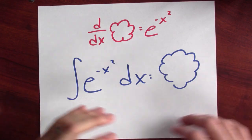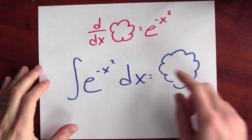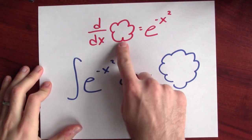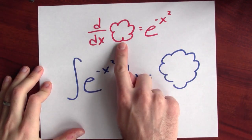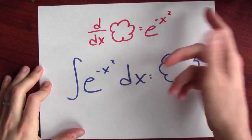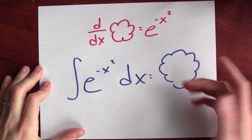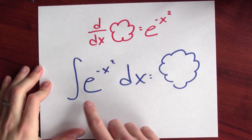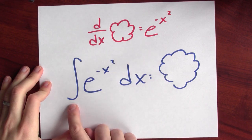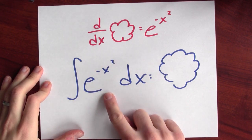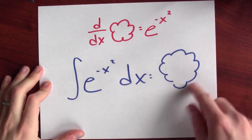Let's try a really hard example now. Can you find some function so that if I differentiate that function, I get e to the negative x squared? Which is just another way of saying I want to anti-differentiate e to the negative x squared. What is that?